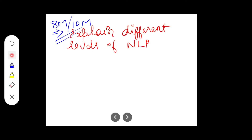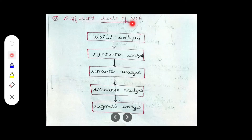Hello everyone, thanks for watching our videos. Moving on to the next question: explain the different levels of NLP. This is a very important question because it has been asked in previous year question papers multiple times, so the chances of it being asked again are high. The five levels of NLP are lexical analysis, syntactic analysis, semantic analysis, discourse analysis, and pragmatic analysis.